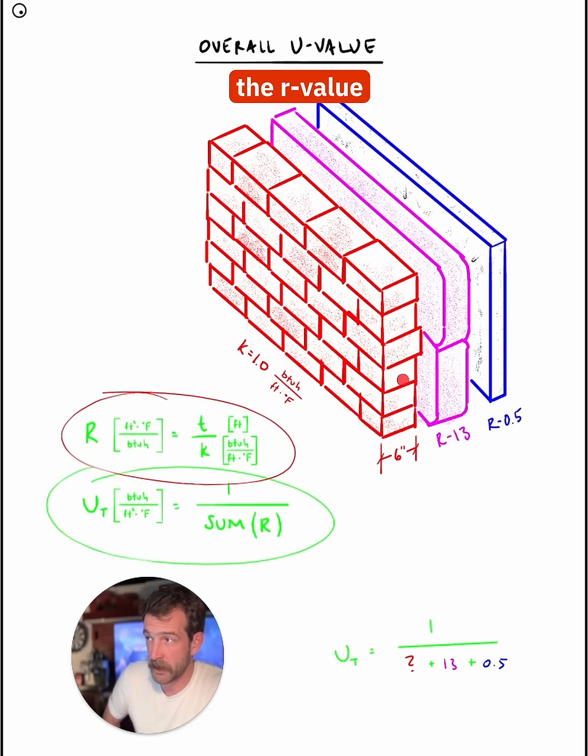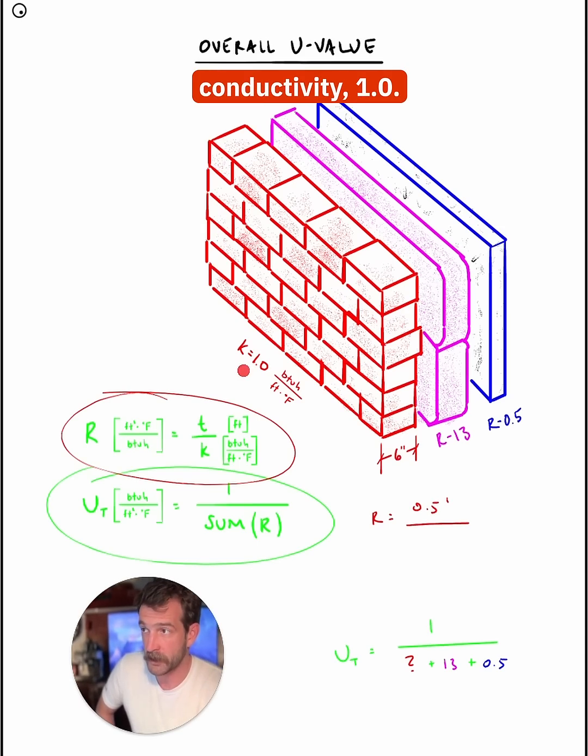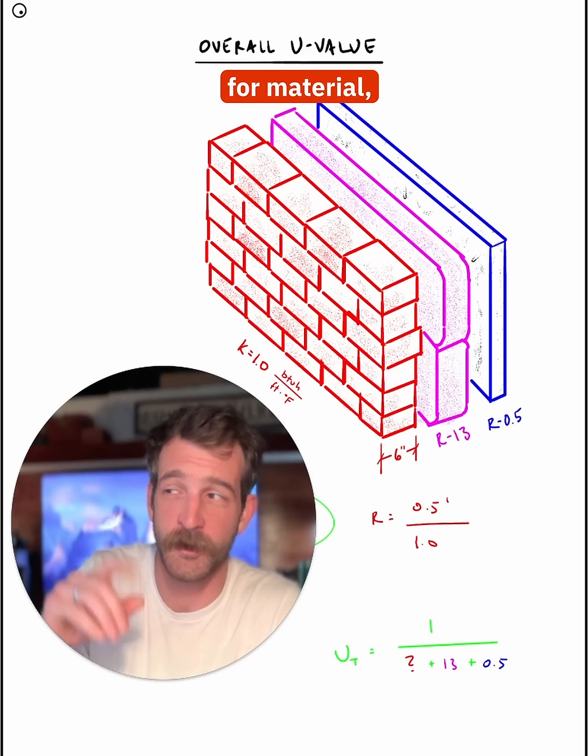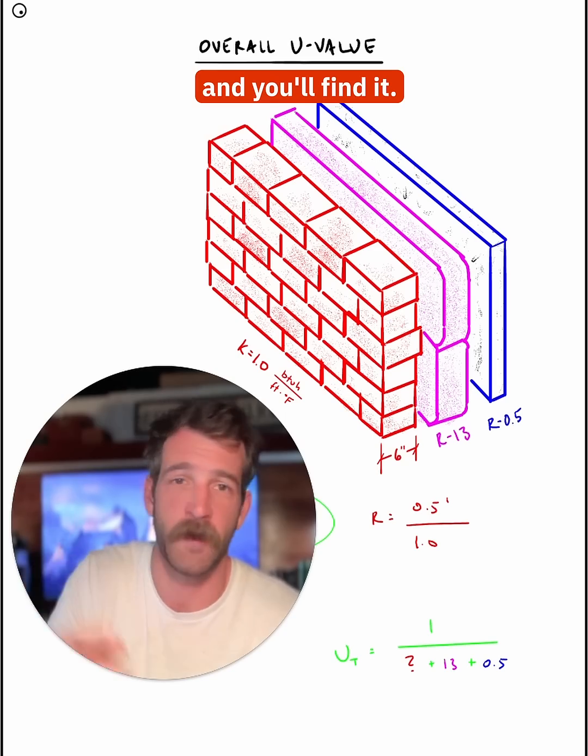So if I'm calculating the R-value for this brick layer, my R is going to be equal to my thickness in feet, which is 0.5 feet, divided by my conductivity, 1.0. To find the conductivity for material, just Google search, what is the conductivity of concrete or brick, and you'll find it.